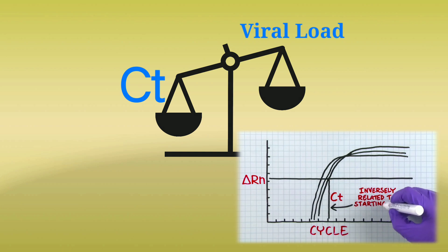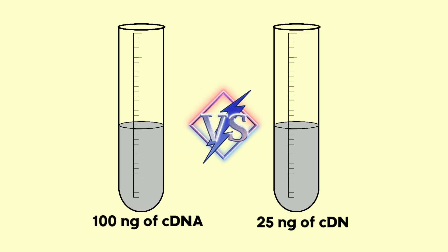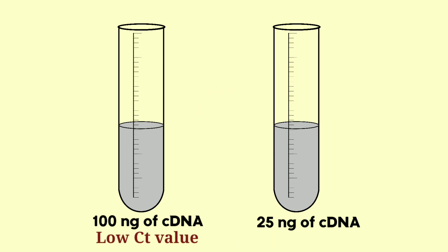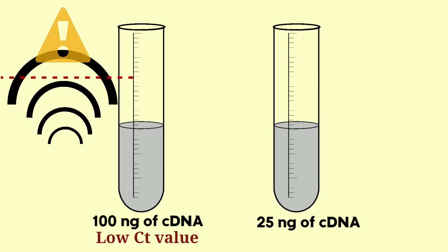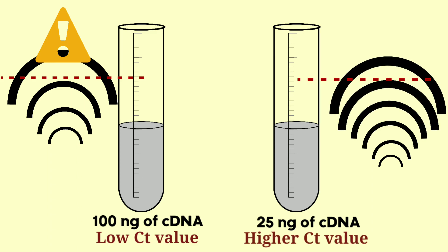Let's understand with an example. If I have two samples — one with 100 nanograms of cDNA and another with 25 nanograms — I'll get an earlier or smaller CT value for the first sample, because it will take fewer cycles to make it detectable. But since the second sample starts with less template, it will take more cycles for the fluorescence to reach the same detection threshold.